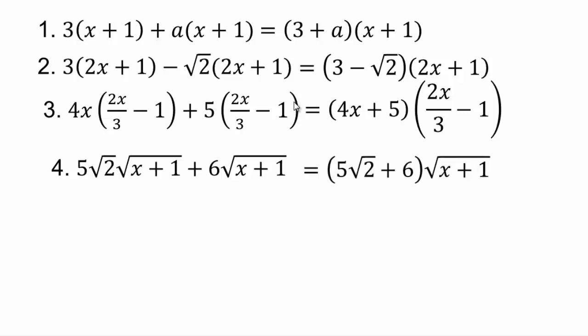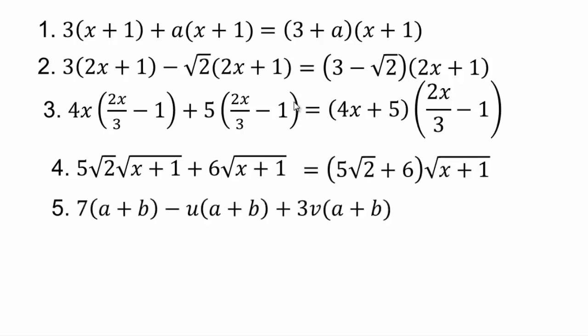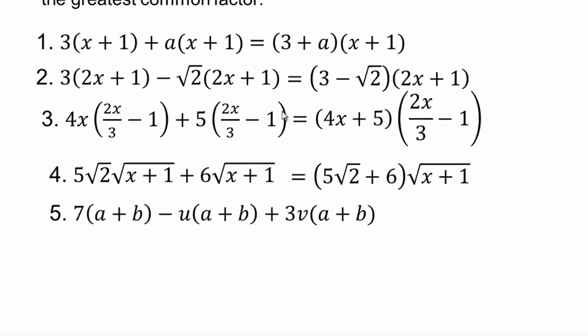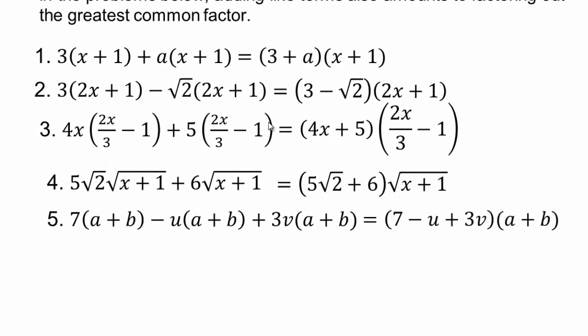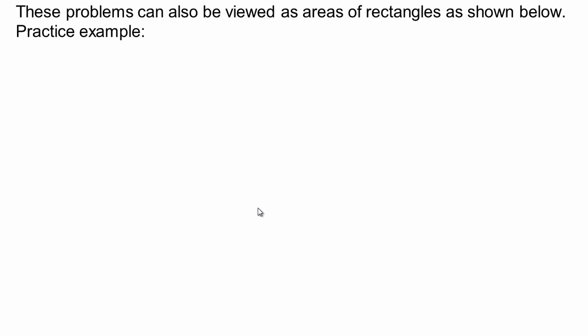Here we have 5 square root 2 plus 6 square root of x plus 1s. We're going to revisit these problems in another way — we're going to ask you to imagine them as areas of rectangles. For right now, assume that all variables are big enough and positive so that we can actually draw these rectangles.